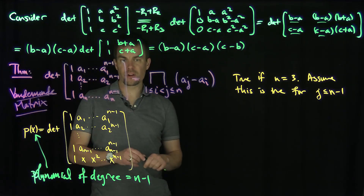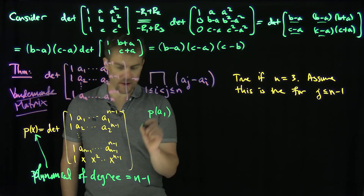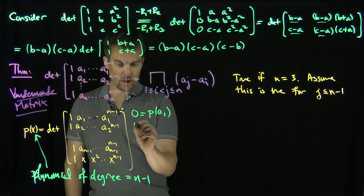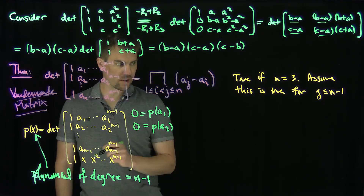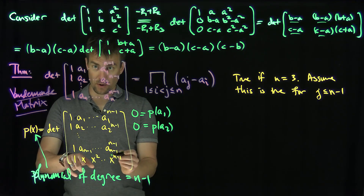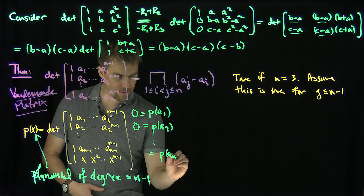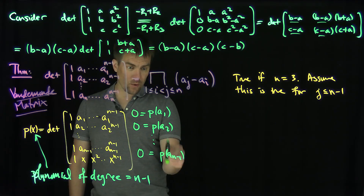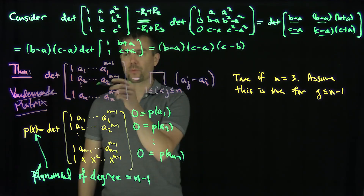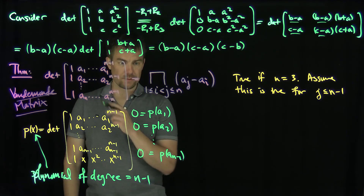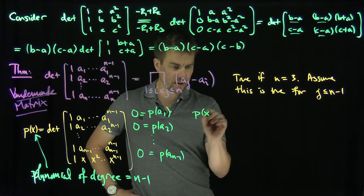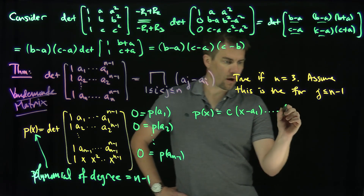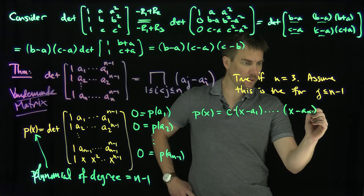Now, p(a₁) equals 0 because plugging in x = a₁ makes the last row identical to the first row. Similarly p(a₂) = 0 because the last row equals the second row, and so on, down to p(a_(n-1)) = 0. Since p(x) is a polynomial of degree n minus 1 with n minus 1 roots — assuming the aᵢ are distinct — p(x) factors as c times (x minus a₁)(x minus a₂)···(x minus a_(n-1)) for some constant c.